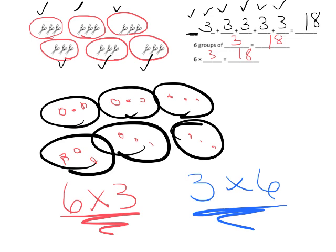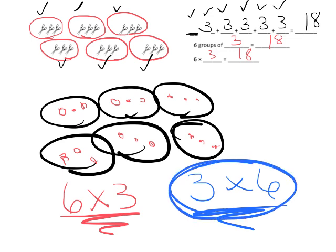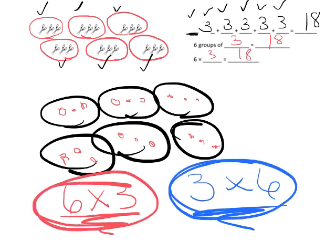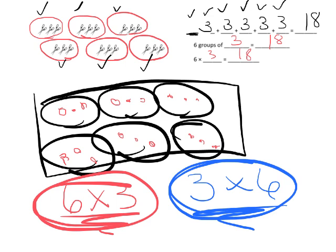In the United States it's more customary to write six times three. As the teacher you've got to make sure you're aware that a kid may be coming from a country where their parents are counseling them to write it differently from what you're expecting. They're both technically right — it's a cultural convention thing. There's no mathematical reason for it; it's just a rule we follow in this country, and not all countries follow that same rule.